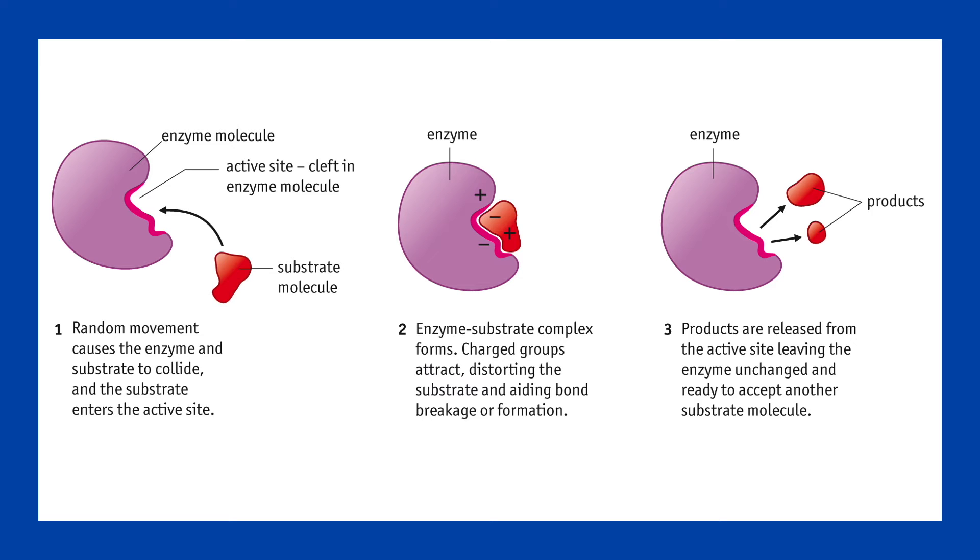The breakdown of casein by the protease trypsin can be used to measure enzyme activity. For before the reaction, the solution is opaque, and after it is transparent. The progress of this reaction can be measured with a colorimeter, or using the time taken to see a cross on paper under the reaction vessel.